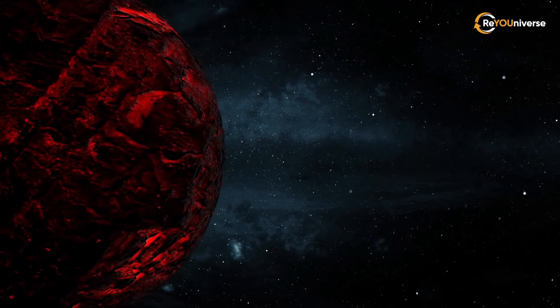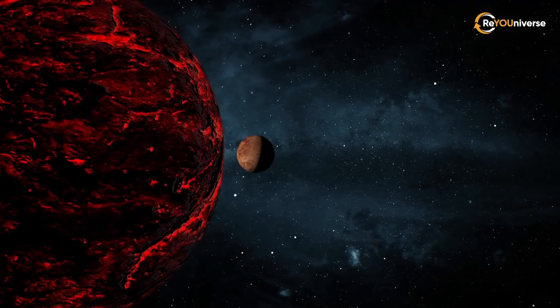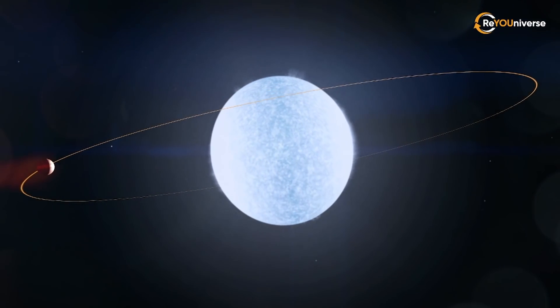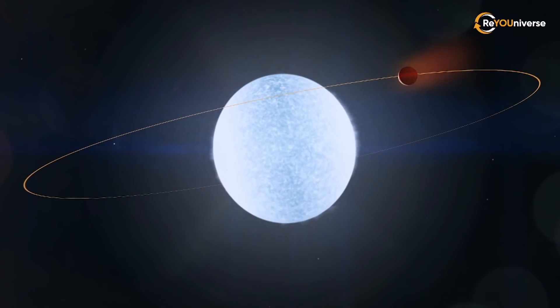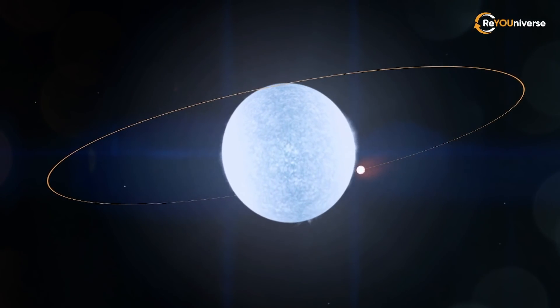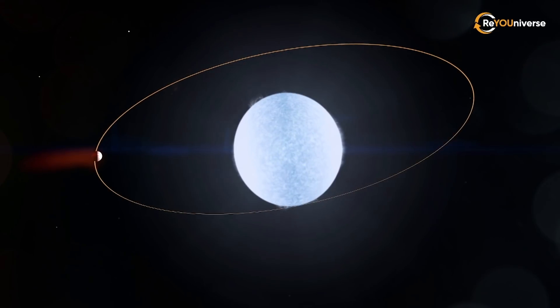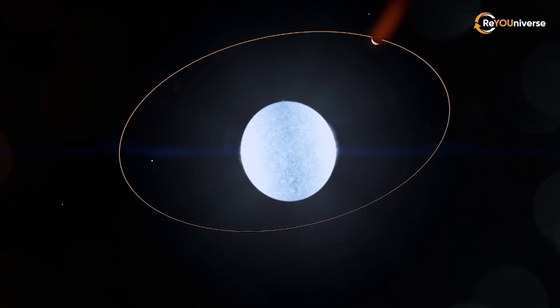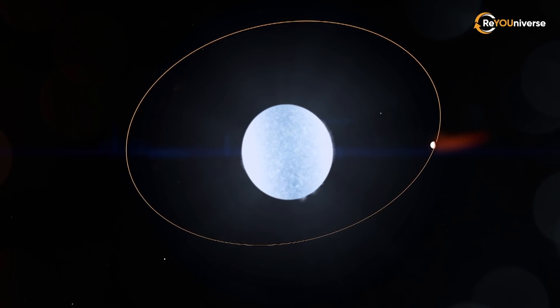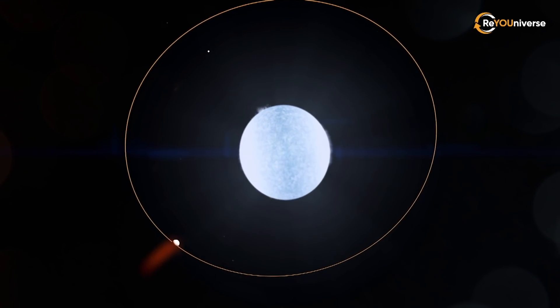There's one more peculiar feature that makes this planet truly unique, and that is its orbit. Unlike other planets that orbit the equatorial region of their parent star, it actually orbits the polar region. In other words, this planet is tilted in such a way that it has a polar orbit. But no one can explain why this planet came to have such an unusual orbital motion in the first place.